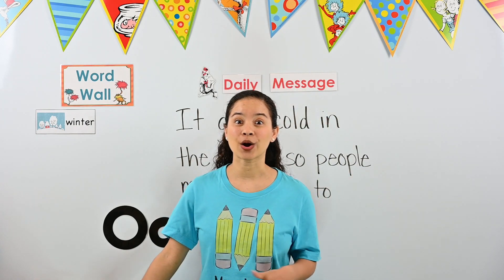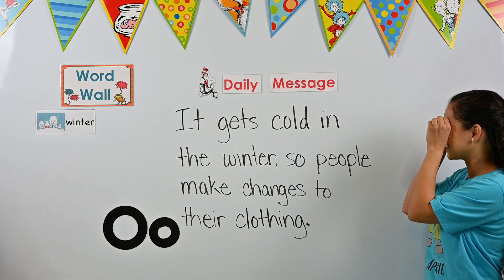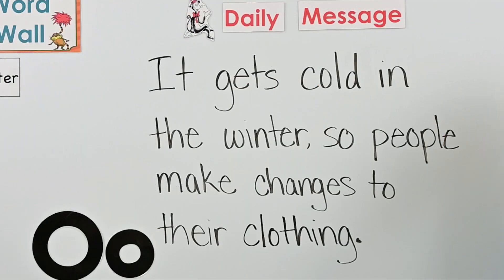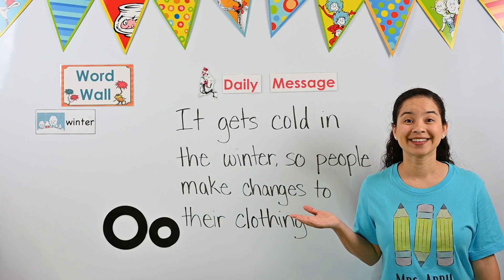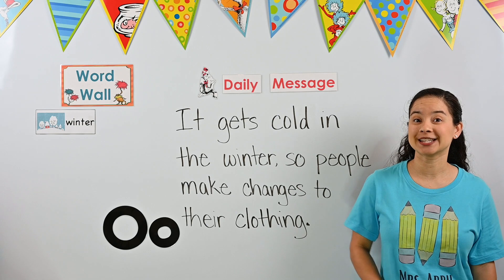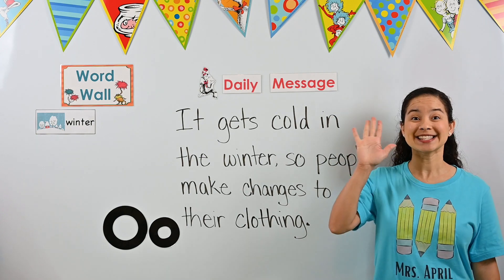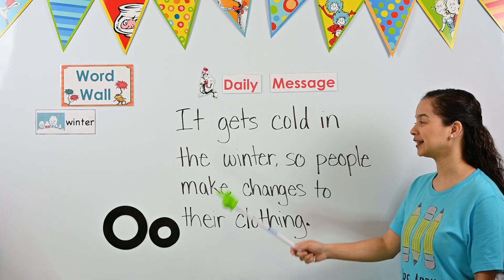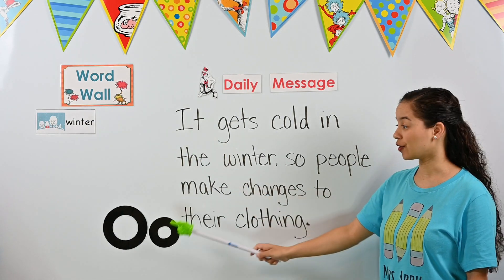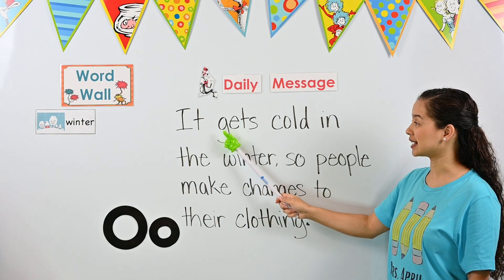Now we are going to put on our detective goggles. Can you find the letter O in our message? There are a few of them — how many can you find? Now we're going to follow along our message and find all the O's together. When you see my pointer pointing to an O, I want you to say 'stop.' Are you ready? We'll start at the top on the left and move to the right. We're looking for an uppercase O or a lowercase O. Remember, say 'stop' when you see one.